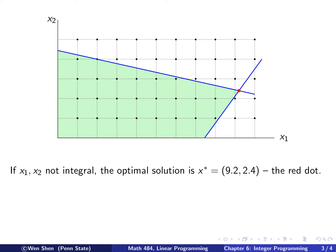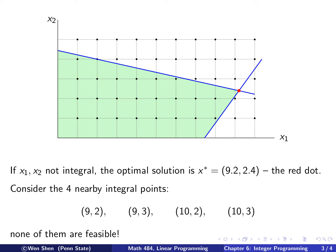So does that information help us locate the optimal integer solution? One might be tempted to consider the four nearest integer grid points next to this optimal solution. Those four nearest points are (9,2), (9,3), (10,2), and (10,3). But we can see from the graph that none of these are actually in the feasible region — they are all outside.